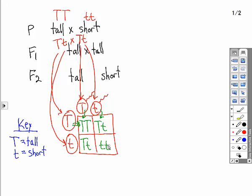For example, you have three tall, those three tall, to one short, this one. So you could express your phenotype ratio as three to one.